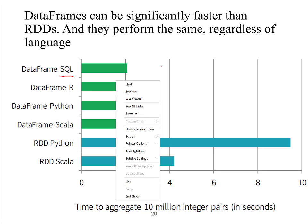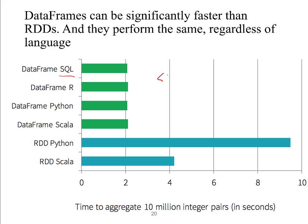Data frames perform the same regardless of programming language. You may have used RDD Python for project one, but RDD Python is arguably the slowest compared with Spark SQL or RDD Scala. For Spark SQL, on different platforms or using different programming languages including SQL itself, they all have very similar performance — much faster than RDD Scala, less than 25% of the time taken by RDD Python.